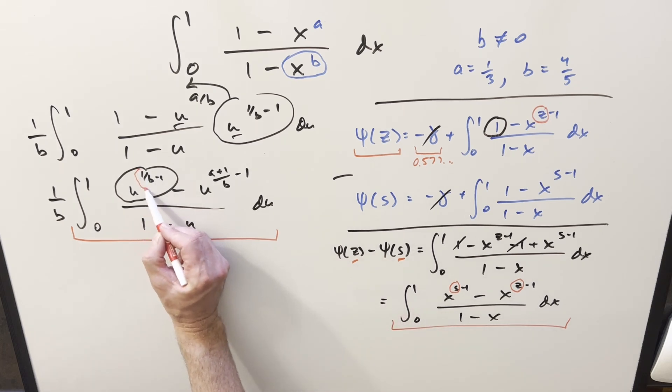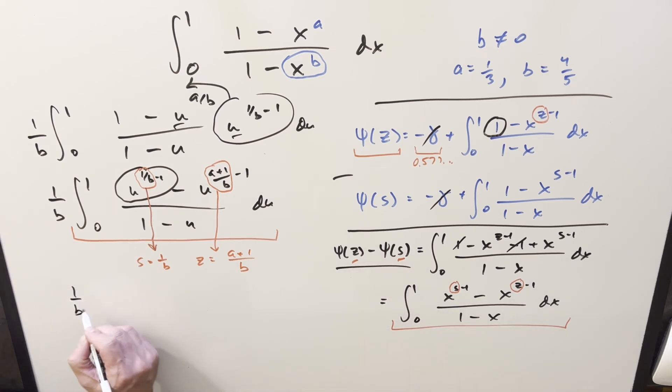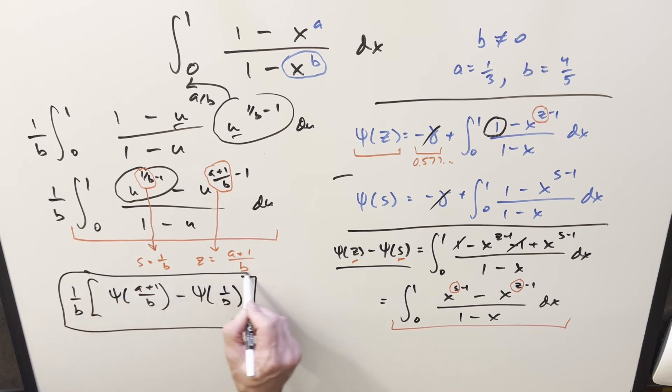In our problem, the s value in this formula is going to be just 1/b. And the z value is going to be right here in this. This z value here is going to be (a + 1)/b. So that's going to allow me to just use this formula. We have the 1/b still in front around this whole thing. We're going to have digamma of z, which is this part. So we have digamma of (a + 1)/b minus digamma of the s value, which is 1/b. And that's going to be our general formula for whatever our a and b is.